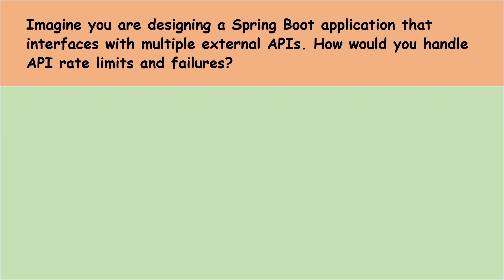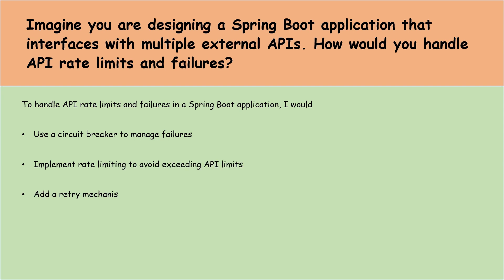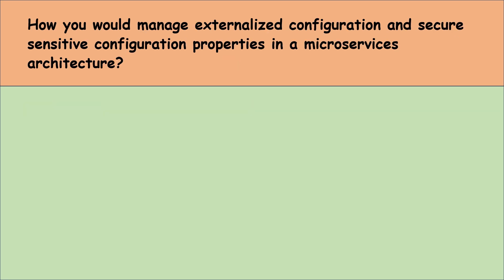Let's move to the next question: imagine you are designing a Spring Boot application that interfaces with multiple external APIs. How would you handle API rate limits and failures? To handle API rate limits and failures, I would use a circuit breaker to manage failures, implement rate limiting to avoid exceeding API limits, add a retry mechanism with exponential backoff for temporary issues, and use caching to reduce the number of requests. This approach helps keep the application reliable and efficient.